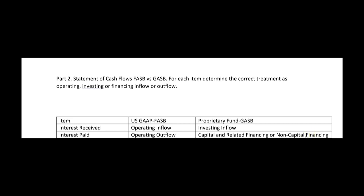Interest paid: under US GAAP, interest paid is an operating outflow. But under GASB for proprietary funds — which have two financing sections — interest paid is either capital and related financing or non-capital financing, depending on what the borrowing was for. If the water company borrowed money to grow, it's capital and related financing. If it was an emergency loan, it's non-capital financing. Remember, the general fund and government-wide statements don't have a statement of cash flows; it only appears in the fund-based statements for the proprietary fund.